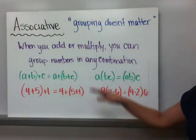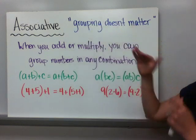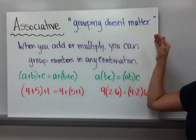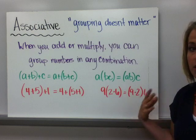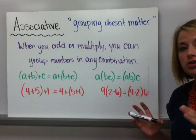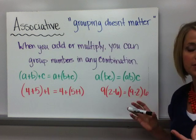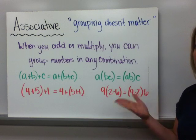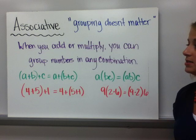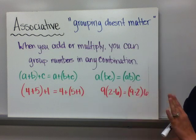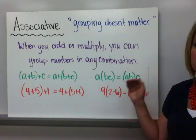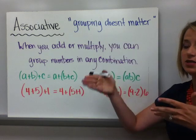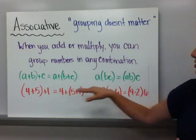The associative property. I like to think of the short version of that: the grouping doesn't matter. And when you think grouping, you think grouping symbols, which is parentheses. I don't want you to think that just every time you see parentheses that it's automatically associative property. You could apply the commutative property to parentheses. The difference between commutative and associative is with commutative, the order of the terms have changed. Where in associative, they're staying the same.